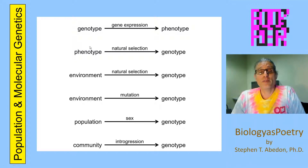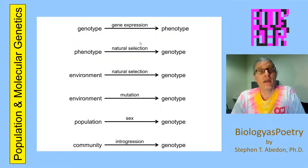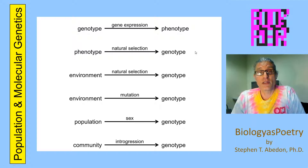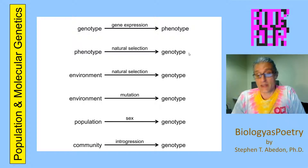However, there can be a flow of information from phenotype to genotype, and this is mediated by natural selection. So phenotype is acted upon by natural selection, which can have the effect of modifying genotype. This modification of genotype, particularly within populations, results in changes in allele frequencies, and it also can result in adaptation as a consequence of natural selection.